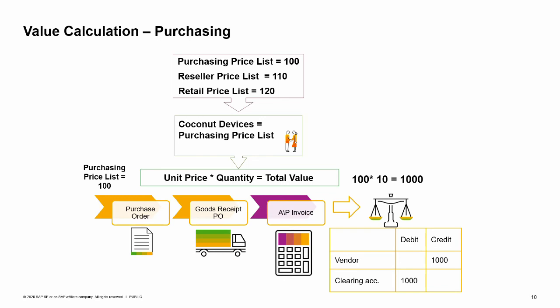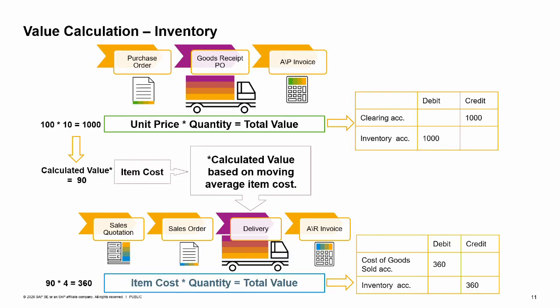Joe emails the purchase order to the vendor. A few days later, Joe receives a delivery including 10 portable media players from Coconut Devices. In SAP Business One, he copies the purchase order to a goods receipt PO. A week later, the invoice from Coconut Devices arrives via mail, and the accountant copies the goods receipt PO to an AP invoice. Since no change was made to the price during the copy-to process, the AP invoice total value is 1,000, and these are the credit and debit amounts in the automatic journal entry created by the AP invoice.